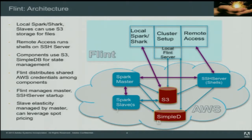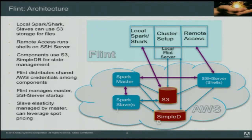Here's the Flint architecture in one slide. You have Flint that runs on the client machines and it provides local Spark and Shark access. One of the things I've done is make it simple for people to get S3 access without having to remember how to pass your AWS credentials over and over again. There's also remote access which runs on shells on an SSH server inside the Amazon Cloud. The components of Flint use S3 and SimpleDB for state management.